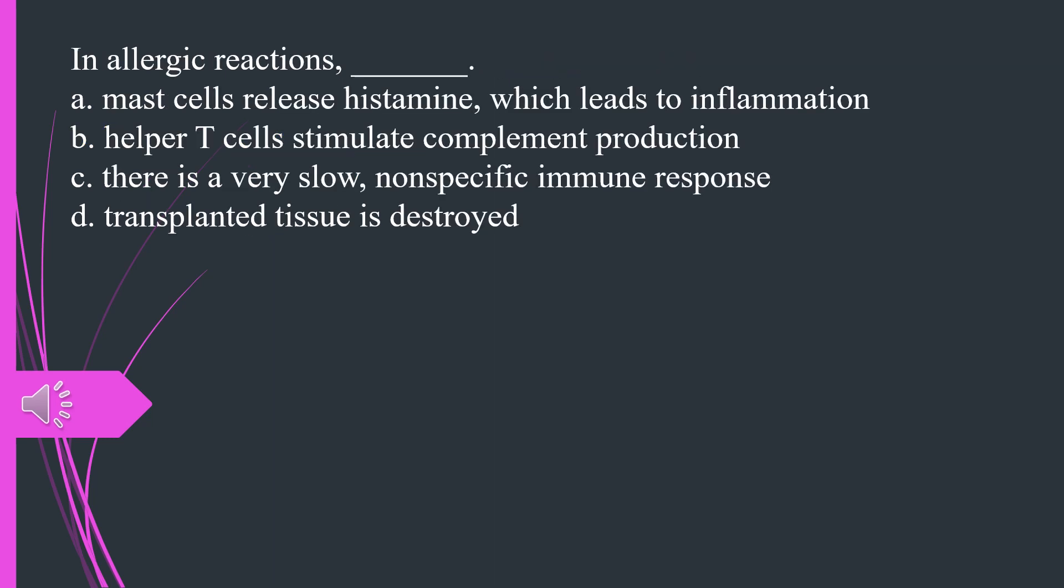In allergic reactions A. Mast cells release histamine, which leads to inflammation B. Helper T cells stimulate complement production C. There is a very slow, nonspecific immune response D. Transplanted tissue is destroyed. The answer is A, mast cells release histamine, which leads to inflammation.